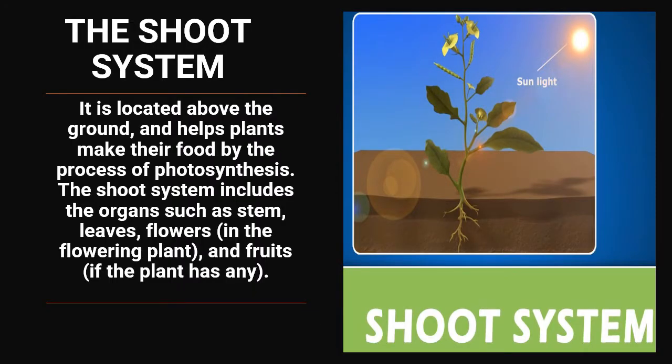Next comes the shoot system. It is located above the ground, and helps plants make their food by the process of photosynthesis. The shoot system includes organs such as stem, leaves, flowers, and fruits.